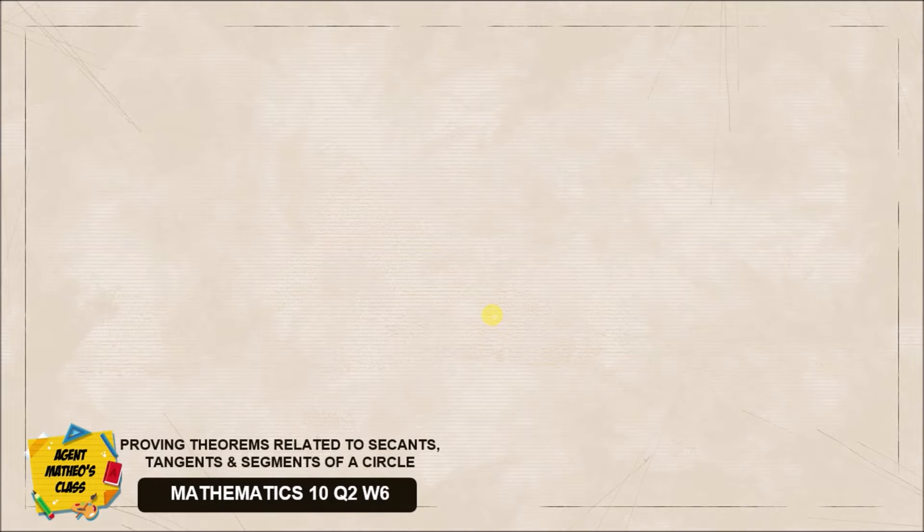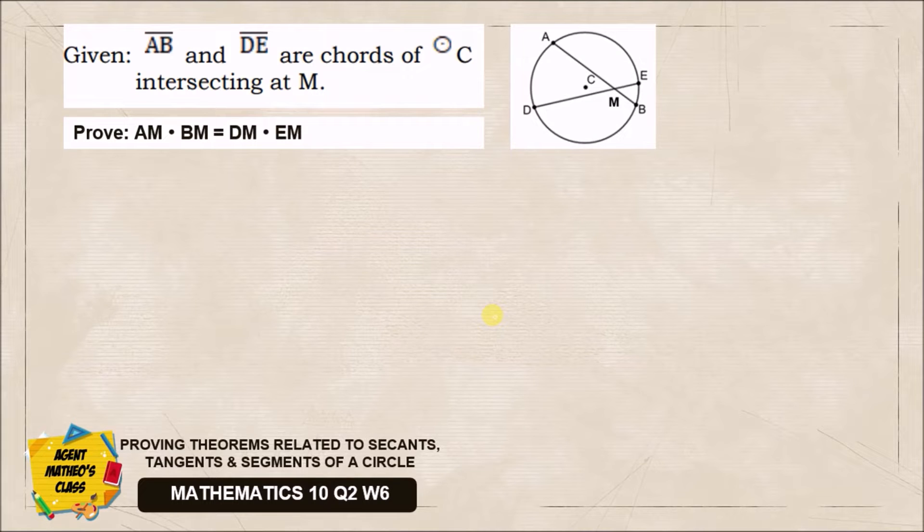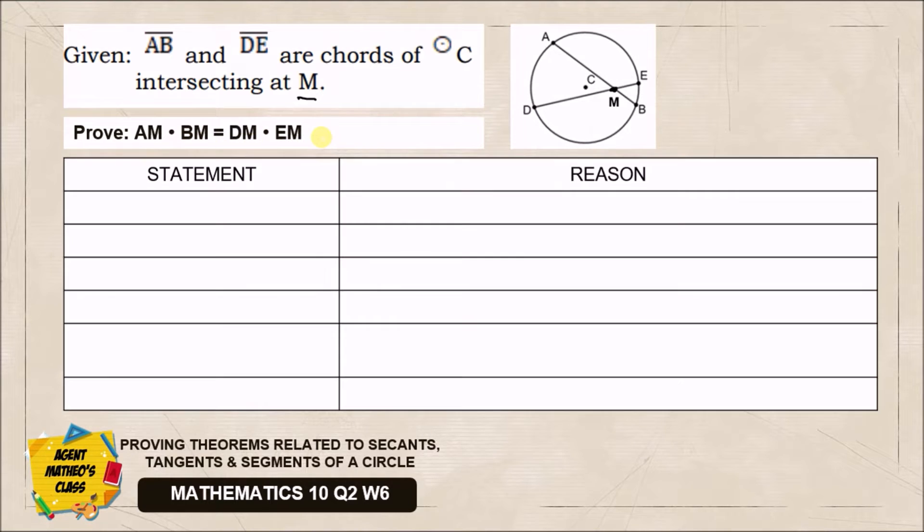We are going to prove this using two-column proof. We are given that AB and DE are chords intersecting at point M inside circle C. We are going to prove that AM·BM = DM·EM. Using two-column proof: left side is statement, right side is reason. This will be number one, as always, because when we have a given, we start with that.